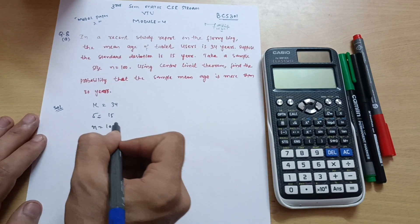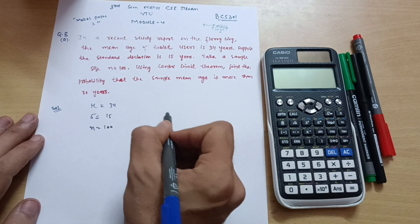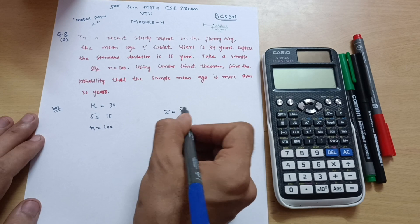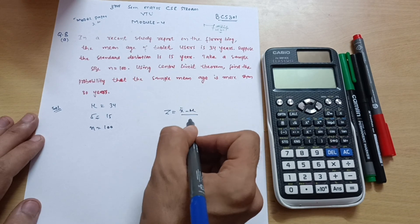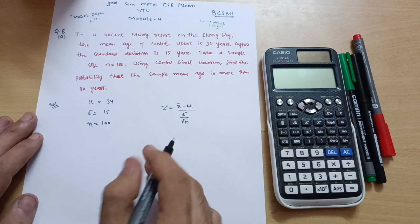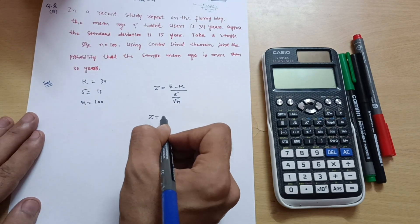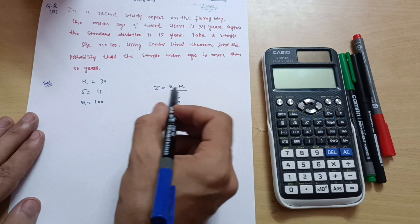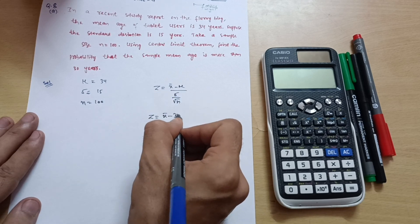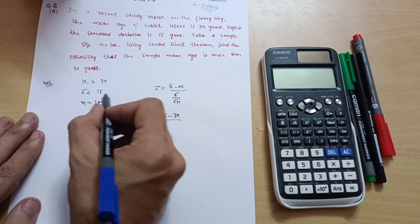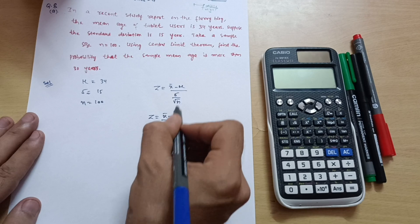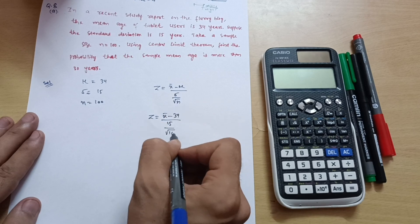As you already know, the formula is z equals x̄ minus mu upon sigma divided by square root of n. This is called the standard error. Let me write down this formula. z equals x̄ minus, by putting the values of mu, that is 34, divided by sigma, that is 15, upon square root of n. n is the sample size, that is 100.